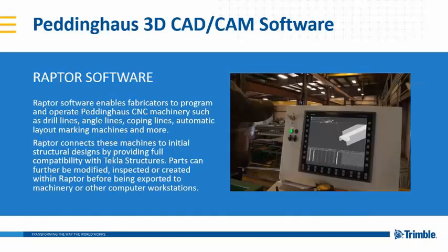Peddinghaus' software is called Raptor Software. It's a 3D CAD CAM software, and it runs our machines. Once you get the parts that you want to run into Raptor, you can generate CNC in Raptor, which our machines will then read and fabricate the parts to your specifications. Raptor software enables fabricators to program and operate Peddinghaus' CNC machinery, such as drill lines, angle lines, coping lines, and automatic layout marking machines.